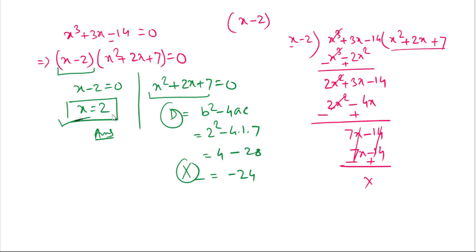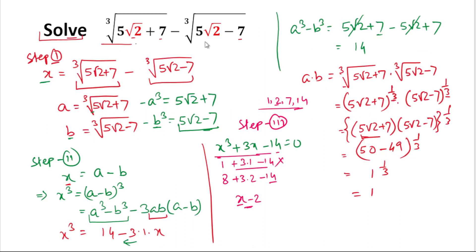Therefore, the only real solution is x = 2. The value of the original expression — cube root of (5√2 + 7) minus cube root of (5√2 − 7) — equals 2. If you have any doubts, please leave them in the comment box, and don't forget to subscribe to the channel. Thank you for watching.